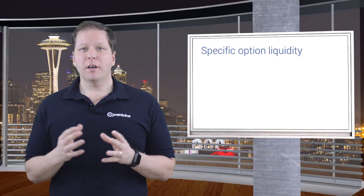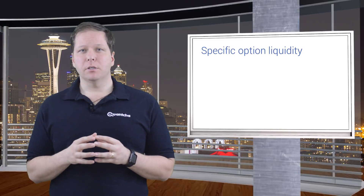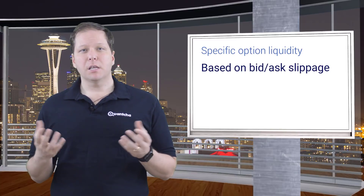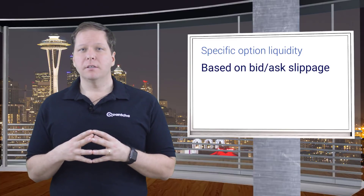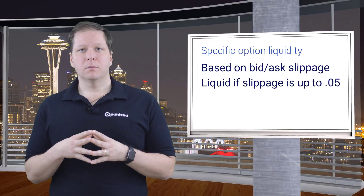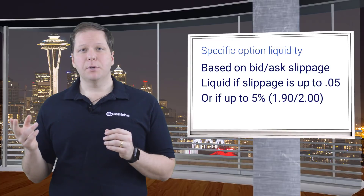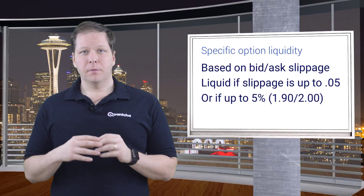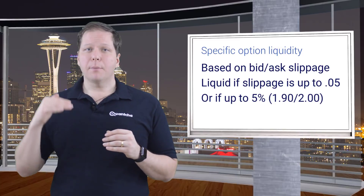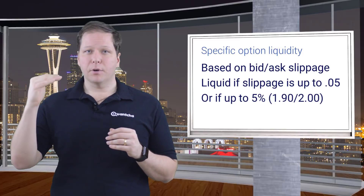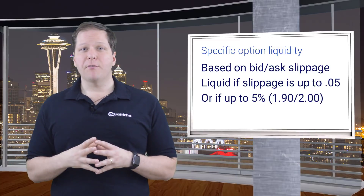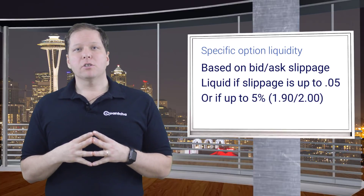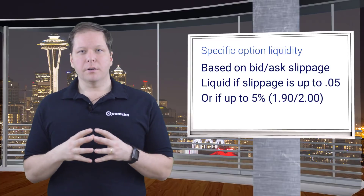When it comes to evaluating the liquidity of a specific option, we consider the slippage of the bid-ask spread. If the slippage is no more than 5 cents, then we consider that option liquid. Or, if the option slippage is no more than 5%, we also consider that option liquid. For example, if you could buy an option for $2 and immediately sell it for $1.90, the net loss would be 5% of the original investment. It might not sound great, but our research has shown that this is a fair line to draw.